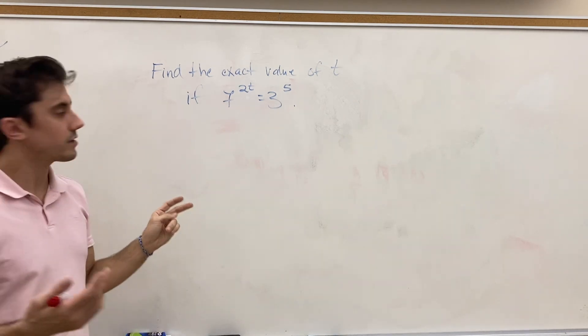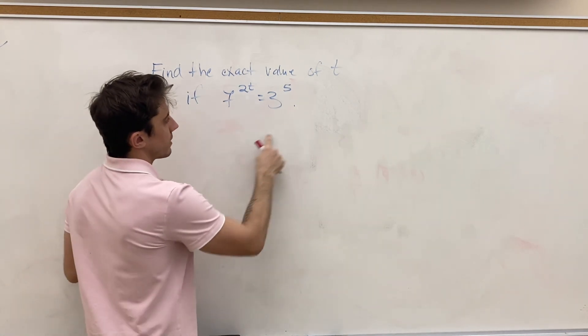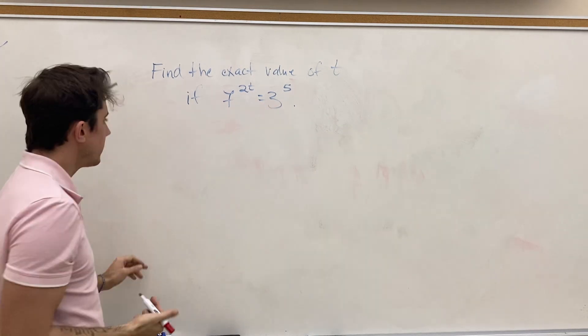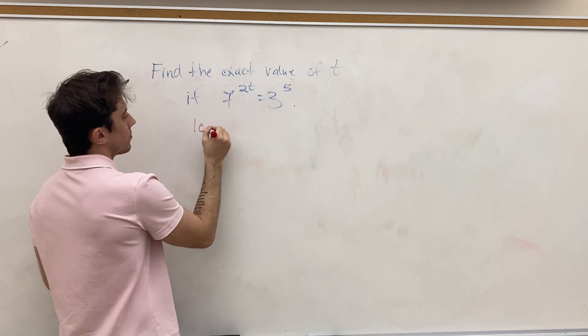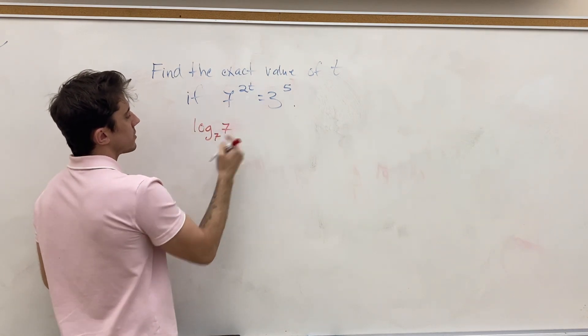one of the log rules that you probably learned, we can get the 7 to drop down underneath on the other side and become the base of a log. The way to do that formally, mathematically correctly, is to take a log base 7 of both sides. So, if we go ahead and do that,